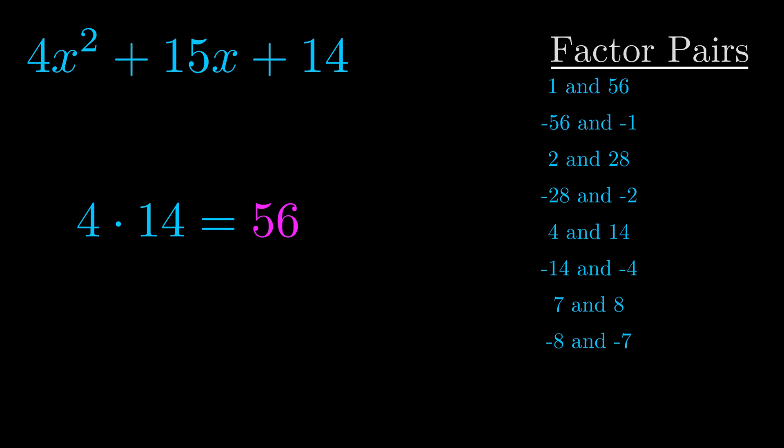The b value is the coefficient on the x term—that's the middle term, the one that we haven't done anything with yet. And really, this is the only factor pair that we need.